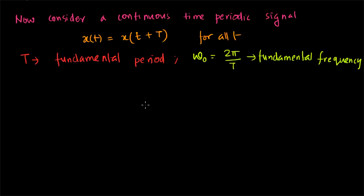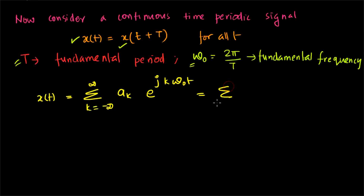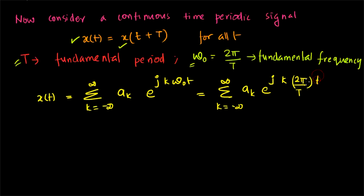Now consider a continuous time periodic signal: x(t) = x(t + T). This is the expression for a periodic signal — the same signal repeats after the fundamental period T for all t, where T is the fundamental period and ω₀ = 2π/T is the fundamental frequency of the signal. From the above discussion, x(t) can be expressed as the summation from k = −∞ to +∞ of ak·e^(jkω₀t), which equals the summation of ak·e^(jk·2π/T·t).